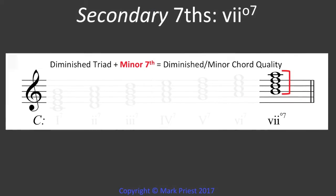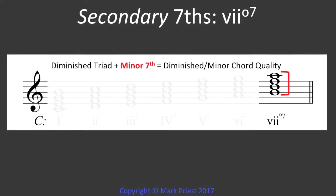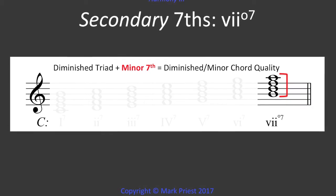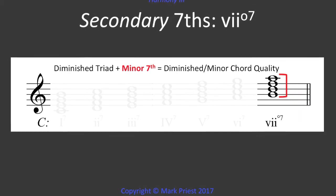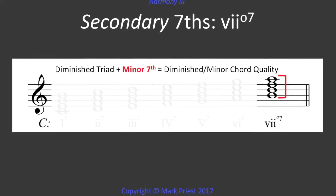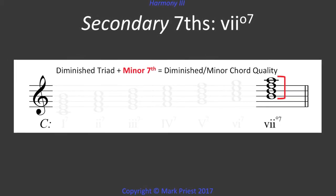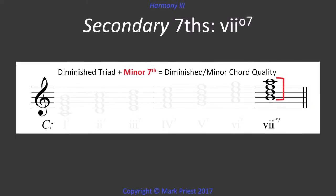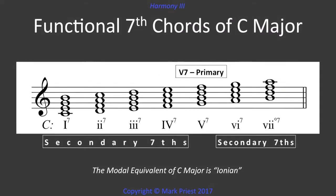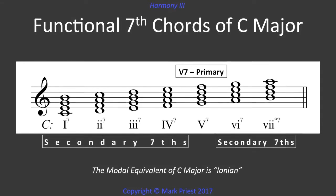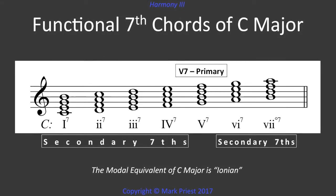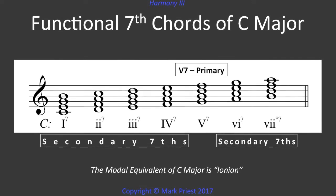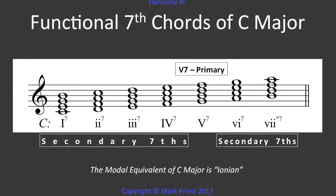The 7th chord built upon the 7th scale degree, or leading tone — the vii7 — consists of a diminished triad plus a minor 7th. So, there they are: the functional 7th chords of the key of C major — the primary V7 surrounded by a gaggle of secondary 7th chords.